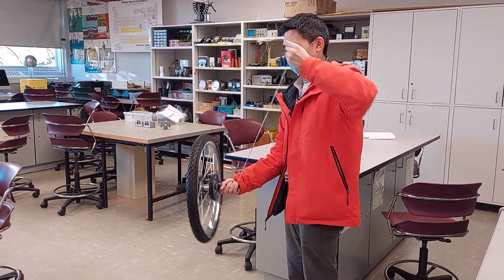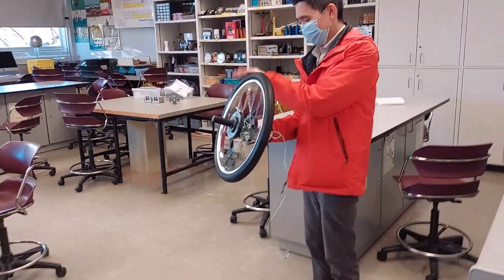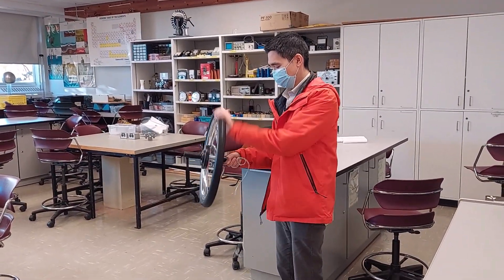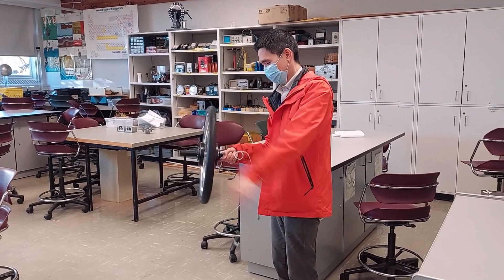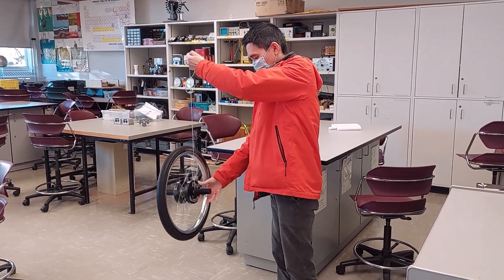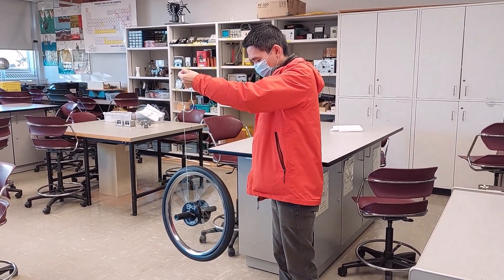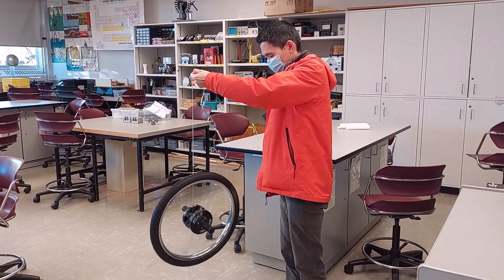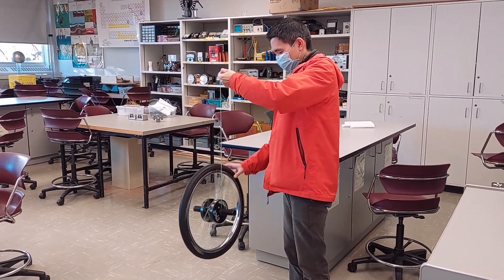When the wheel is not spinning, the wheel will tumble when we let it go. Now when we give the wheel an angular momentum to start, the torque by gravitational force will interact with the existing angular momentum, causing the wheel to rotate around the rope instead.